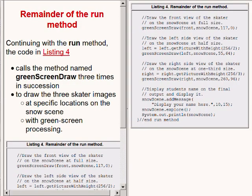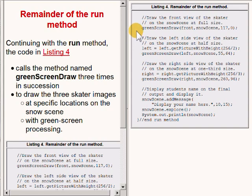The run method continues on the right of your screen. The code in the run method contains three similar sections of code — one here, one here, and one here. Note that each of these three sections of code calls a method named green_screen_draw.